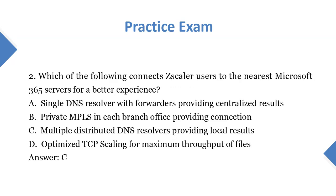Question 2: Which of the following connects Scalar users to the nearest Microsoft 365 servers for a better experience? A. Single DNS resolver with forwarders providing centralized results. B. Private MPLS in each branch office providing connection. C. Multiple distributed DNS resolvers providing local results. D. Optimized TCP scaling for maximum throughput of files. Answer: C.